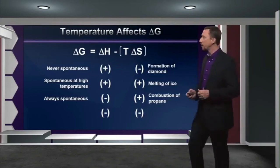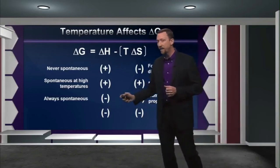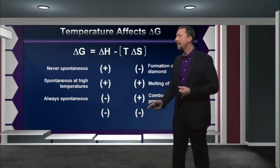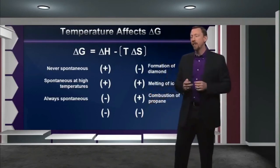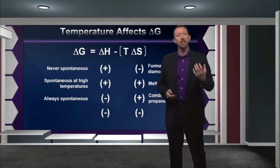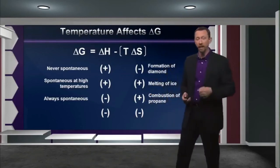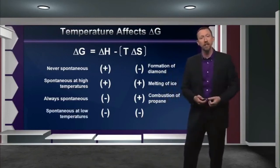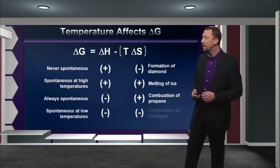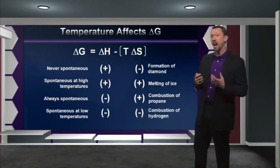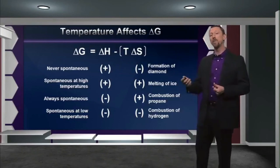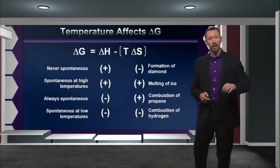Now, our fourth set of circumstances would be if we have a negative delta H, which contributes to spontaneity, but a negative delta S, which is working against us. So, in this case, to minimize the effect of entropy, we'd have to lower the temperature to make the reaction more likely to be spontaneous. In other words, it's spontaneous at low temperatures. An example of this reaction is the combustion of hydrogen. Remember that combusting hydrogen and oxygen together creates only two moles of water vapor, which is entropically disfavored. So, at lower temperatures, this reaction is actually more favored.